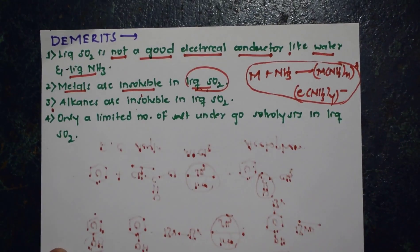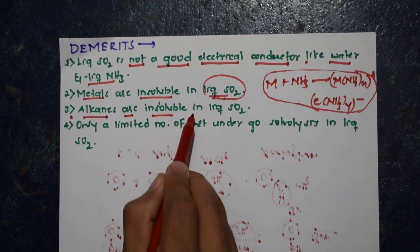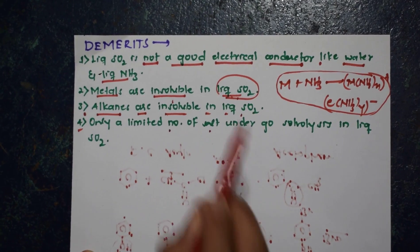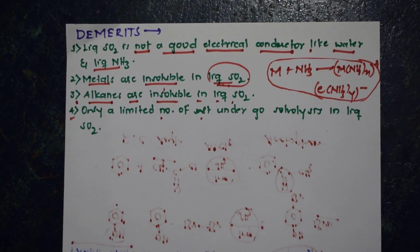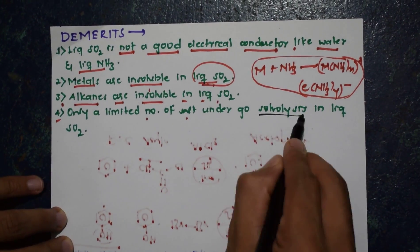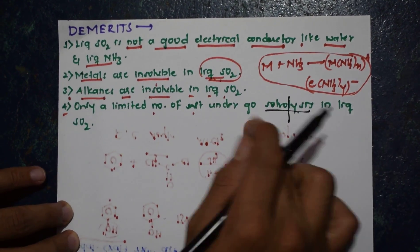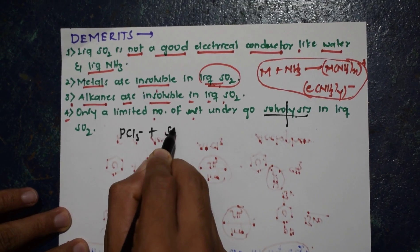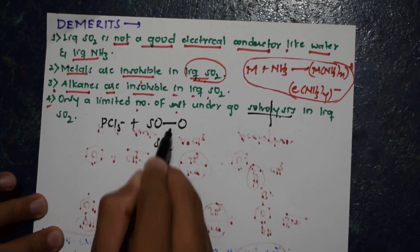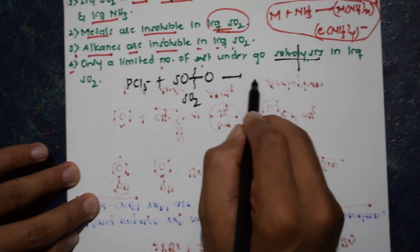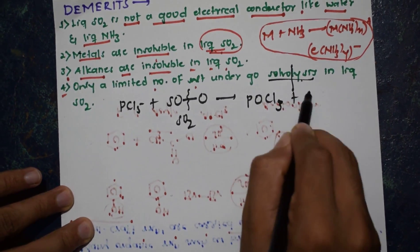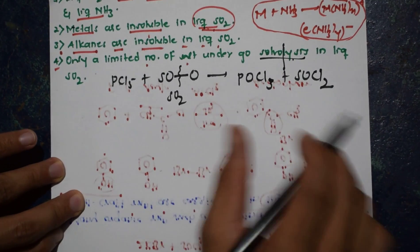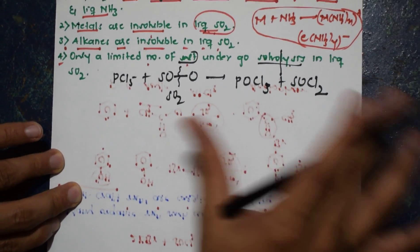The third disadvantage of liquid sulfur dioxide is alkanes are insoluble in sulfur dioxide. The fourth disadvantage is only a limited number of salts undergo solvolysis in liquid sulfur dioxide. Solvolysis means breaking of the solvent — 'solvo' means solvent, 'lysis' means breaking. An example: PCl5 plus SO2 gives POCl3 plus SOCl2. That is a good example of solvolysis. Only a limited number of salts undergo solvolysis, not all salts.